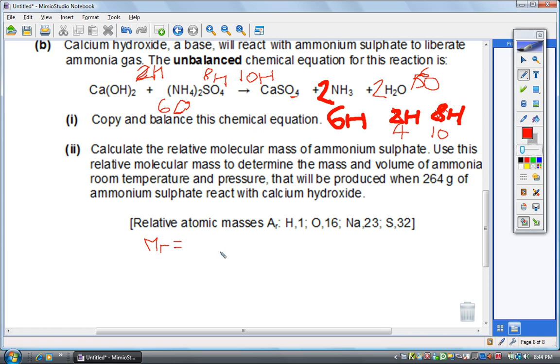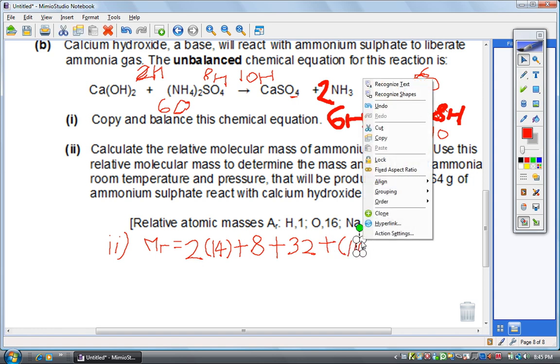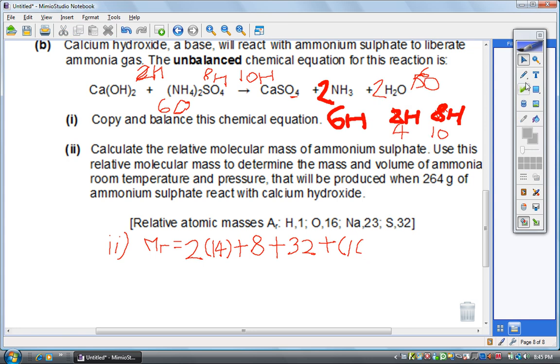Use this to determine the mass and volume of ammonia at room temperature and pressure that will be produced when 264 grams of ammonium sulfate reacts with calcium hydroxide. So first step is to find out the MR of ammonium sulfate. To find the MR of ammonium sulfate we will use the values given in the question. So our ammonium sulfate consists of 2 nitrogen, so it's 2 nitrogen - nitrogen has a mass of 14, plus 8 hydrogen because 4 times 2, plus 16 times 4.